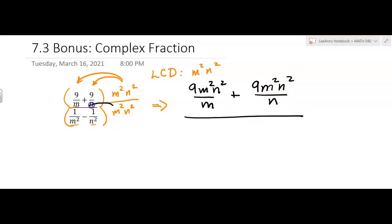And then in the denominator, I'm also going to distribute. So I'm going to have M squared N squared over M squared, and then distributing here, minus M squared N squared over N squared. It's a tongue twister. Okay. So that's the hard part. Find the LCD, and then basically you're just multiplying every numerator by that LCD.